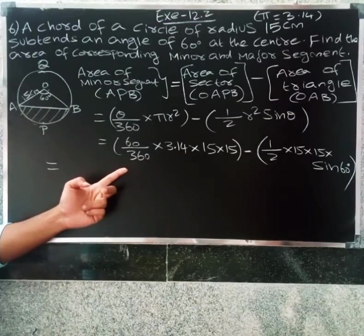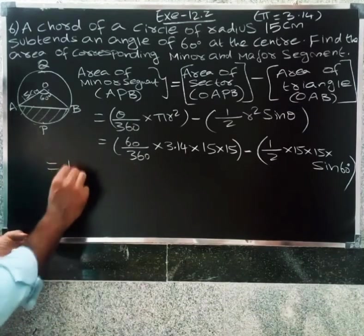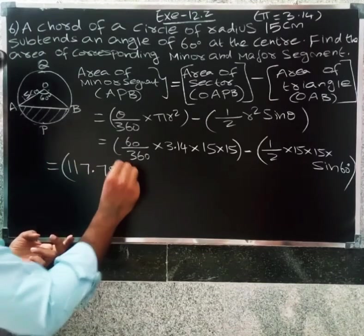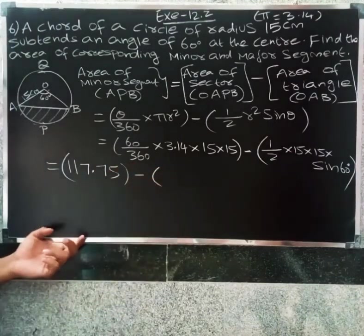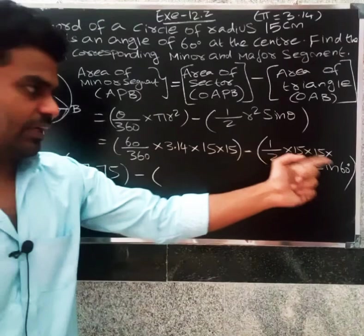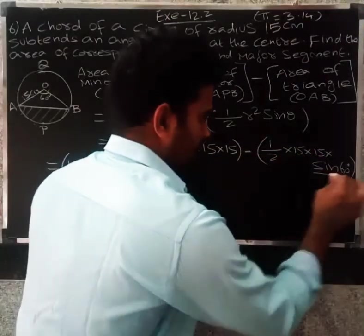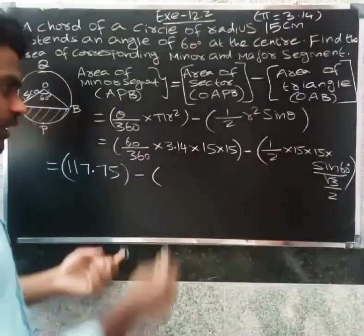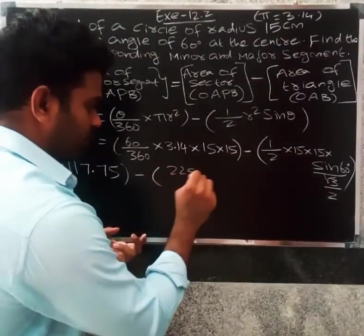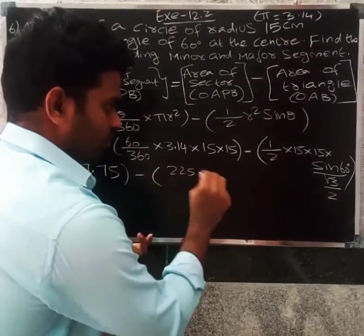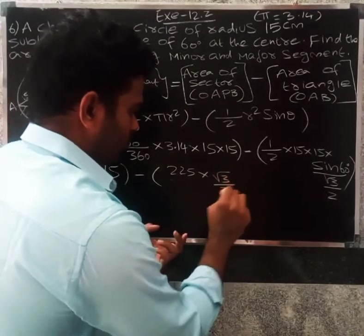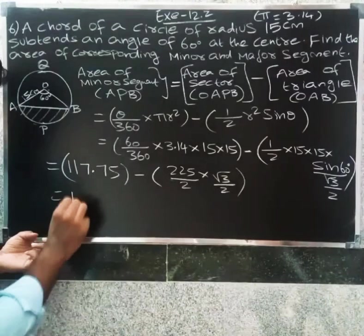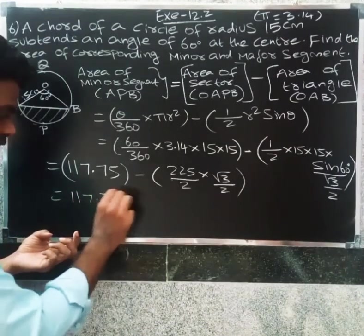Minus 1 by 2 into 15 into 15 into sine 60. The sine 60 value is root 3 by 2. So 15 into 15 is 225 into root 3 by 2.